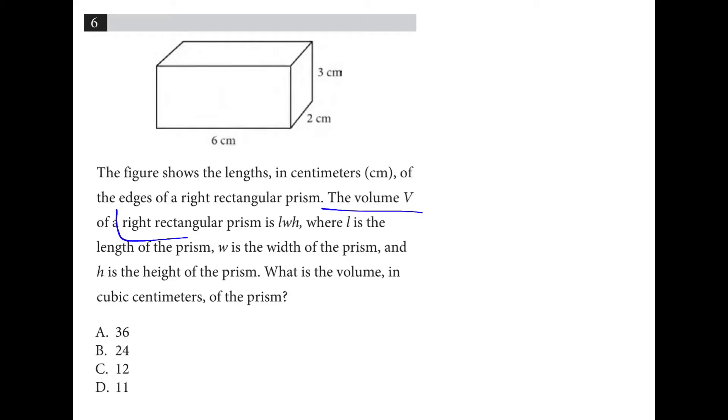The volume of a right rectangular prism uses this formula, and we can plug in these three numbers, so 6 times 2 times 3 is 36.